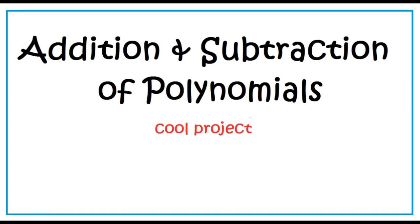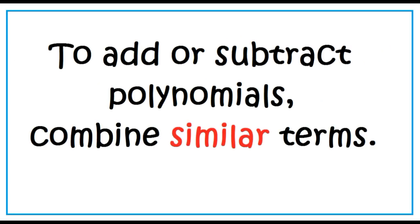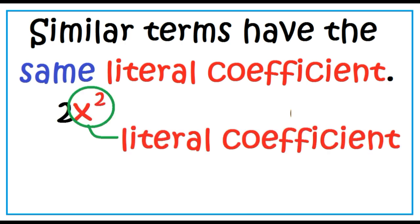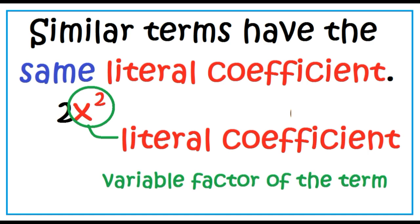Addition and subtraction of polynomials. To add or subtract polynomials, combine similar terms. Similar terms have the same literal coefficient. The literal coefficient is the variable factor of the term.